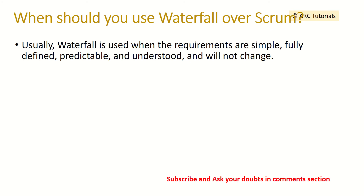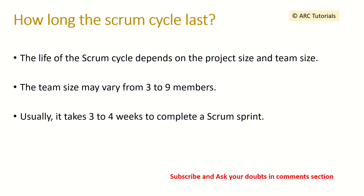How long does a scrum cycle last? A scrum team can range from three to nine members. A sprint can last anywhere from two to four weeks — the standard is typically two weeks but can go up to three or four weeks.